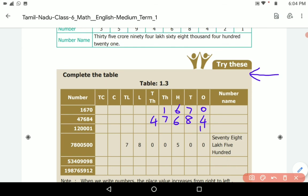So here 1. How many zeros are there? Three zeros are there: 0, 0, 0. So now here 2, here 1. So 1,20,001. This is the number name.